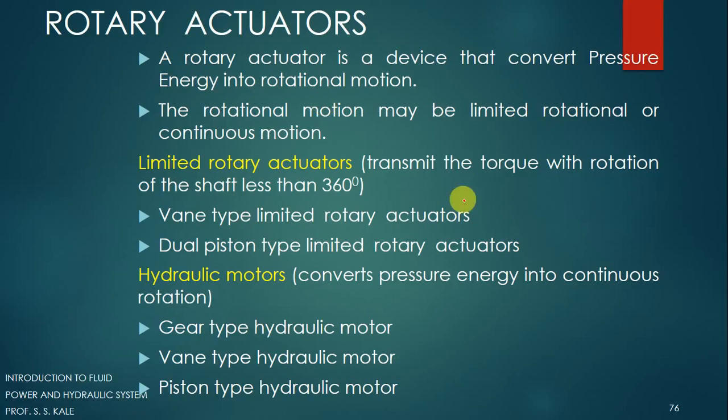Now, in a limited rotary actuator, we transmit the torque with rotation of less than 360 degrees. And in that, we have a vane type of limited rotary actuator and a dual piston type of limited rotary actuator.